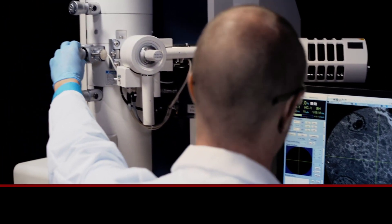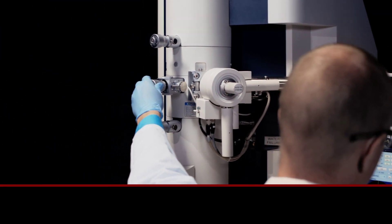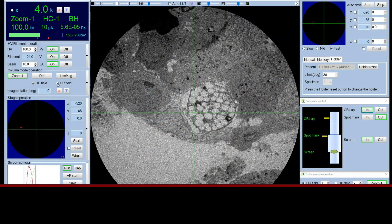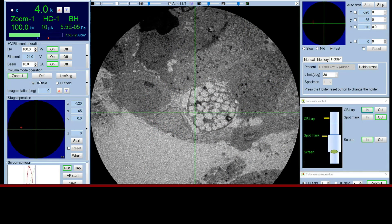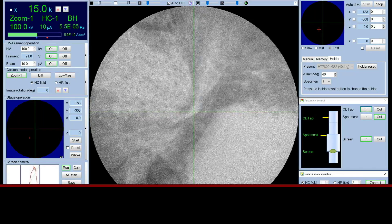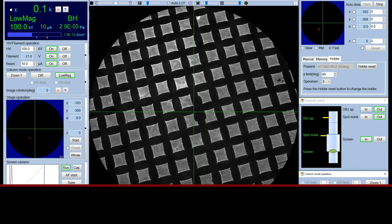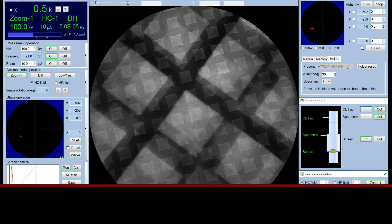This TEM features a unique dual-mode objective lens system, whereby with a single click the electromagnetic field of the objective lens can be altered, creating conditions optimized for high-contrast imaging or high-resolution imaging. The HT7800 is like getting two microscopes in one. No need to compromise.